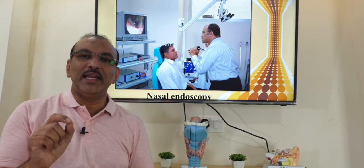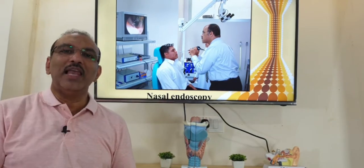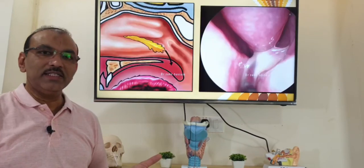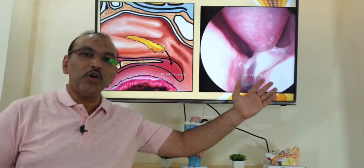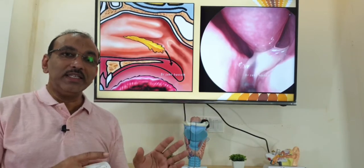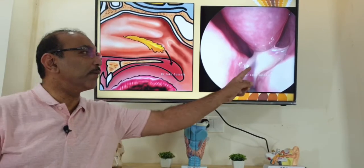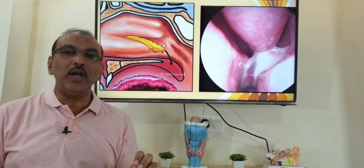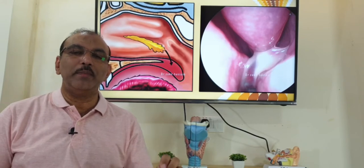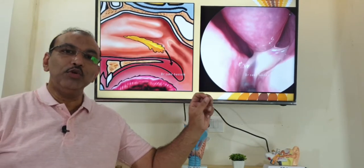We would like to do a nasal endoscopy — we put a camera in the nose and have a look. What we find is pus discharge. This is a diagram; this is a real photograph. If we find pus discharge, we can identify which sinus is involved. Suppose the patient has sinusitis with high-grade fever and severe headache — we would like to take pus for culture sensitivity so we know which bacteria is involved and which specific antibiotic to give. We do that with the endoscope.